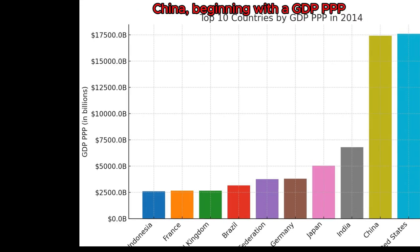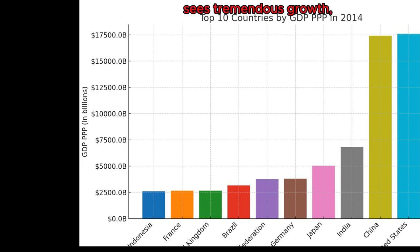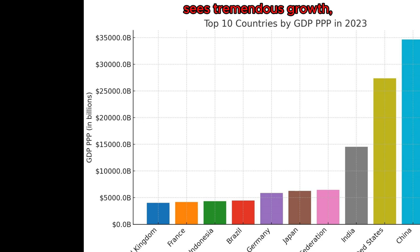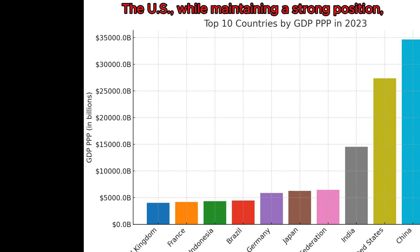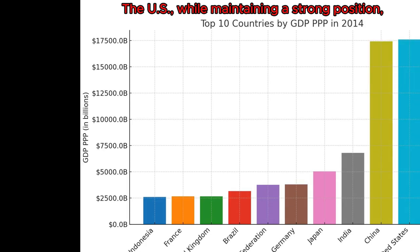China, beginning with a GDP PPP of approximately $17.4 trillion in 2014, sees tremendous growth, reaching about $34.6 trillion by 2023.